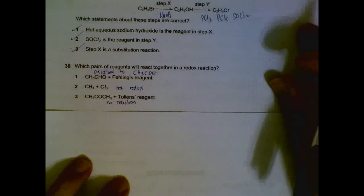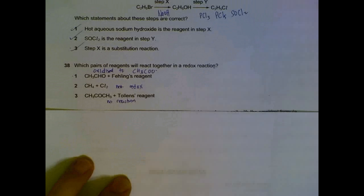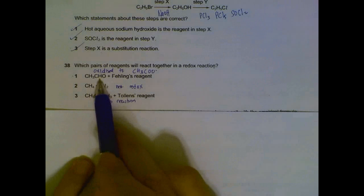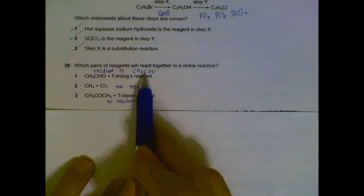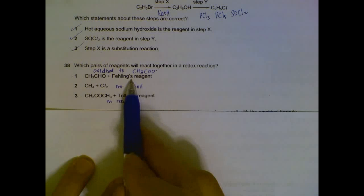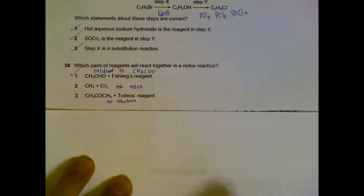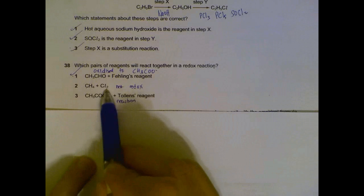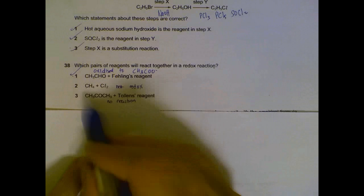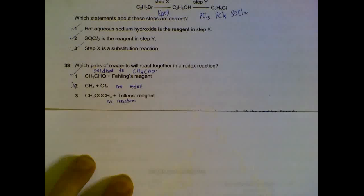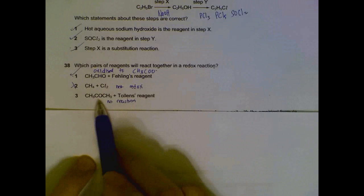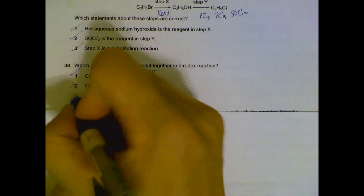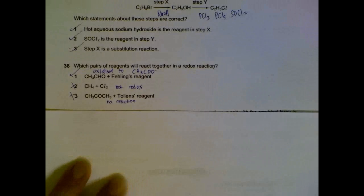Number 38. Which one will react in a redox reaction? We have aldehyde oxidized to acid by this more oxidizing agent. So 1 is correct. Methane and Cl2, if they react, likely will be free radical, not a redox reaction. This is a ketone that will not be oxidized with Tolan's reagent. So only the aldehyde will be oxidized.